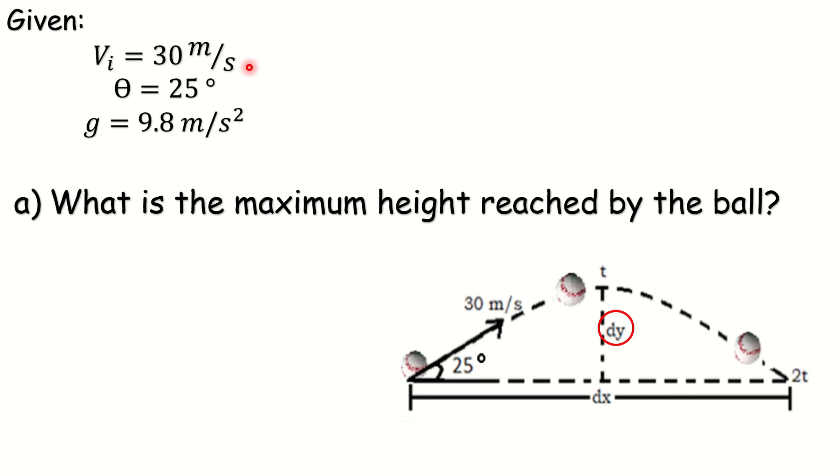Here are the given. Our initial velocity or VI which is equal to 30 meter per second. Our degree of angle which is 25 degrees. Acceleration due to gravity which is 9.8 meter per second squared. The formula that we are going to use is VI times sine theta squared divided by twice the acceleration due to gravity. Now, let us substitute the given to our formula. DY is equal to our VI which is 30 meter per second and sine theta which is sine 25 degrees. Do not forget to square it to itself. Divided by 2 times 9.8 meter per second squared. Multiplying these two quantities and squaring it,